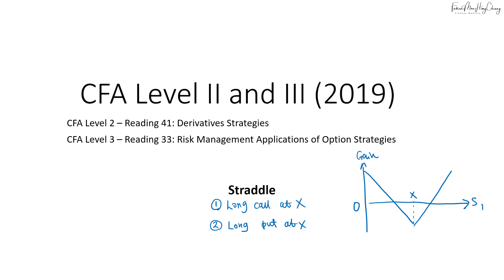There are two breakeven prices, and the center point is where we have the maximum loss. The maximum profit is unlimited on the upside, and if the price falls, the maximum profit is the same as in the long put position.